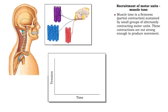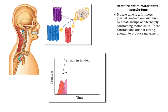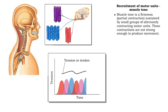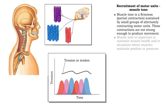Muscle tone is achieved in a similar manner. In a skeletal muscle, small groups of motor units are involuntarily and alternately activated to sustain a partial contraction that is not strong enough to produce movement. Muscle tone is important to maintain muscle health and in situations where muscles maintain position or pressure, such as the sustained contractions of the neck muscles that hold the head upright.